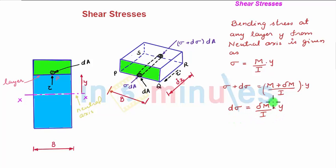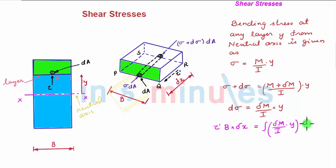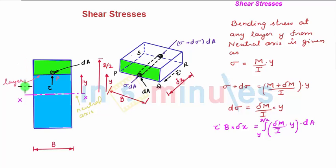Substituting the value of d sigma into the equation, we get tau dash times b times delta x equals the integral of (delta M / I) times y times dA. Since the total shear force at the bottom surface is balanced by the total longitudinal force on the two transverse cross-sections, we integrate from the limit y to d/2, where d is the depth of the cross-section. So: tau dash times b times delta x = (delta M / I) times the integral from y to d/2 of y dA.